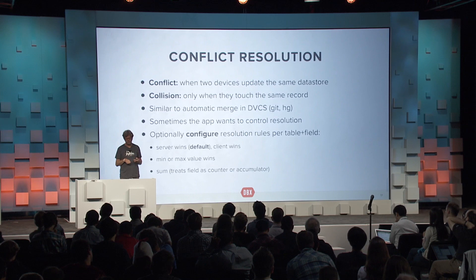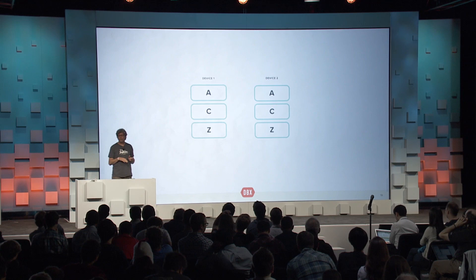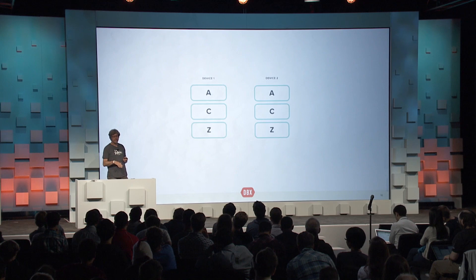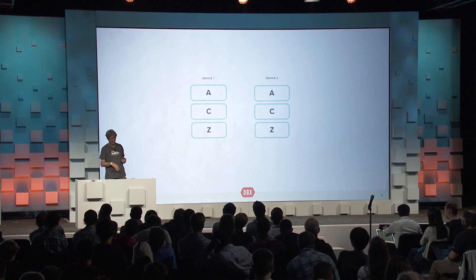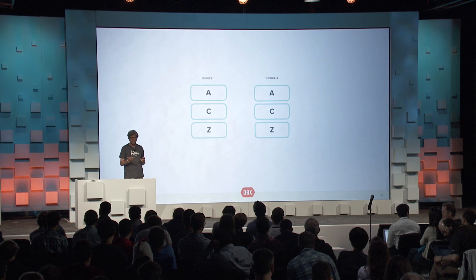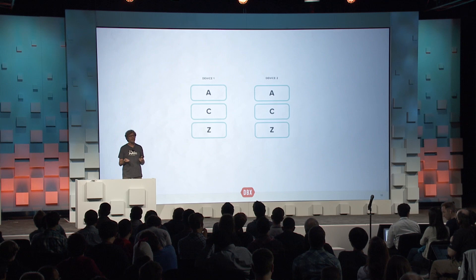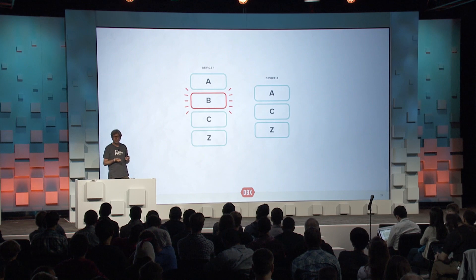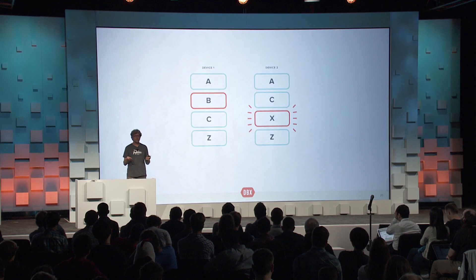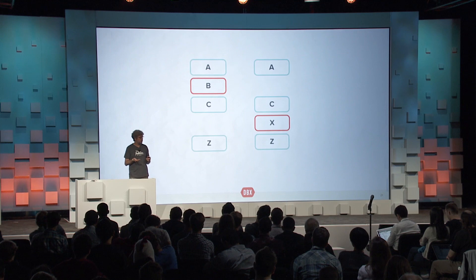Let's walk through a few different examples of conflicts. I'm using a classic employee record from databases 101. Let's say we have an employee database with three records, and two devices both have a copy of that Datastore. On one device, a record is inserted; on another device, another record is inserted. How is this conflict resolved? Very simply by merging the two as if it were a set union operation. This is hardly a conflict at all.